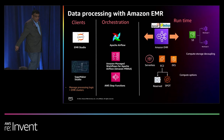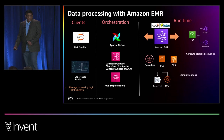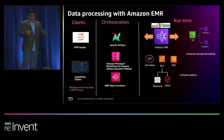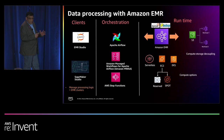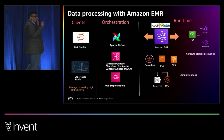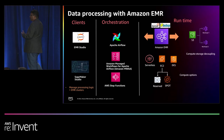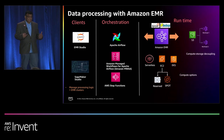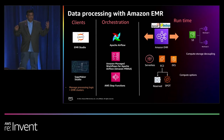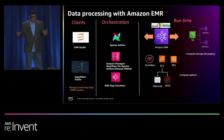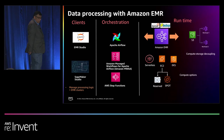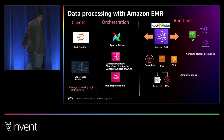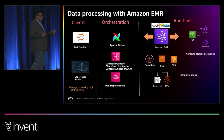Data processing with Amazon EMR: Amazon EMR provides a managed runtime where you can process structured and unstructured data using compute clusters. To build data processing pipelines, Amazon EMR provides open source big data frameworks such as Spark, Hadoop, Hive, Flink, etc. For data processing, data engineers and data scientists can use EMR Studio, which comes with Jupyter Notebooks to build data pipelines. You can also use either self-managed Apache Airflow, Amazon MWAA, or AWS Step Functions to build data processing pipelines with Amazon EMR.